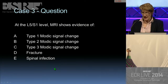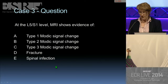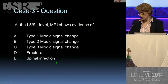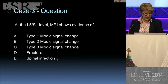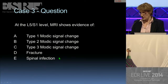The question here is that the MRI has shown evidence of: A, type 1 Modic signal change; B, type 2 Modic signal change; C, type 3 Modic signal change; D, fracture; or E, spinal infection.